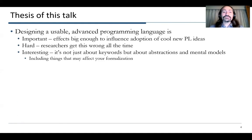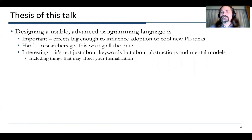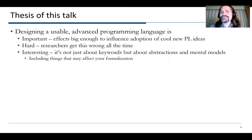In this talk, I hope to convince you that designing a usable, advanced programming language is, first of all, important. With good usability techniques, you can get effects that are big enough to really influence adoption of cool new programming language ideas, and hopefully make things easier even for people who would have adopted it anyway. But it's hard to do so — researchers get this wrong all the time, despite obviously not wanting to make their tools more difficult than necessary. And getting it right is interesting: it's not just about keywords, but about abstractions and mental models and the way they come together.